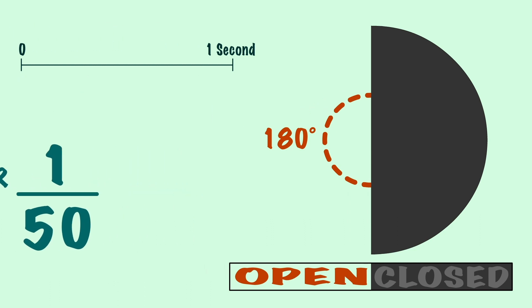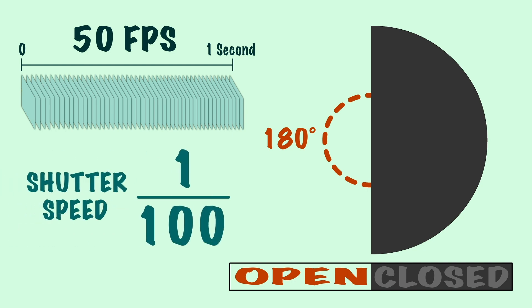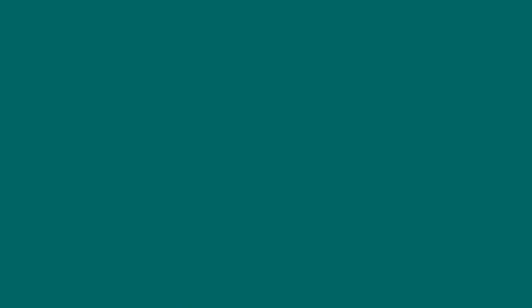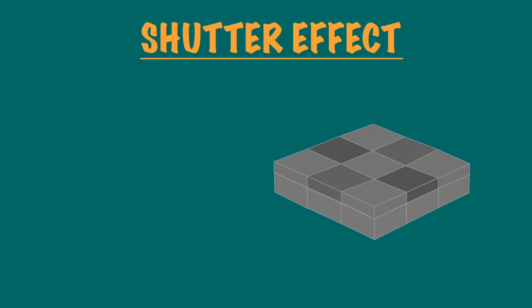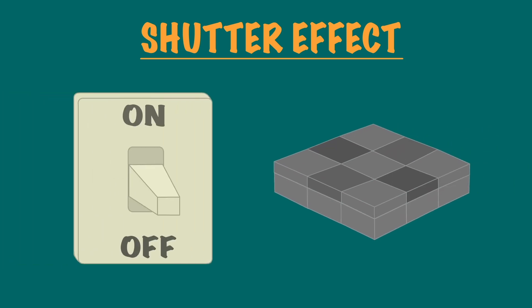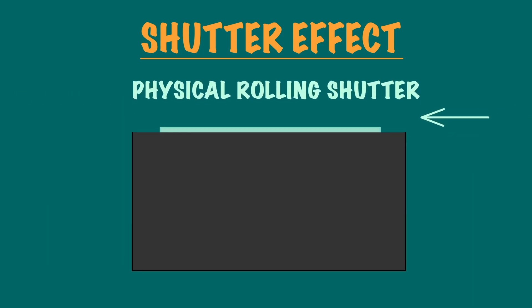If you increase the frames per second to 50, then the shutter speed will be 1/100th of a second. The way digital sensors create a shutter effect without a real shutter is by activating the photosites on the sensor like a switch, either being on or off. This way, it can simulate the length of time a physical shutter would have been open for.